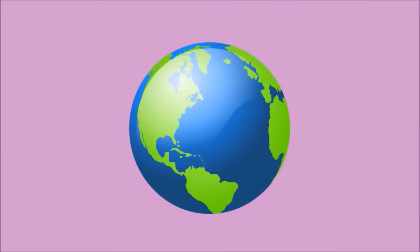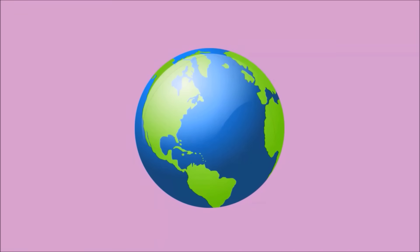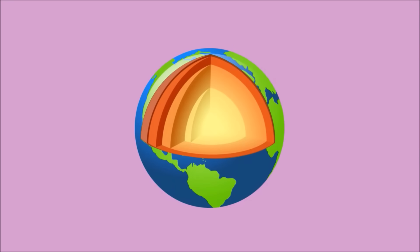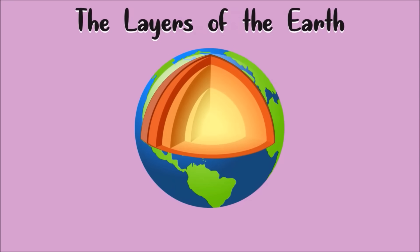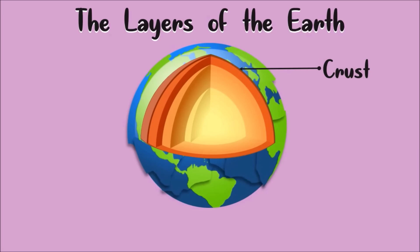This is the Earth. The Earth consists of different layers. Its surface belongs to the first layer called the crust. The crust is made up of several large and small plates.